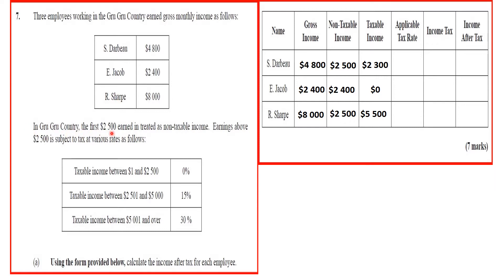The first $2,500 earned is treated as non-taxable income. Earnings above $2,500 are subjected to tax at the following rates: taxable income between $1 and $2,500 is zero percent — meaning non-taxable. Taxable income between $2,500 and $5,000 is taxed at 15%, and taxable income between $5,001 and over is taxed at 50%.